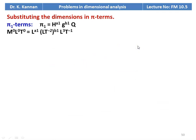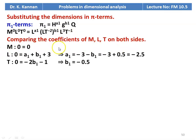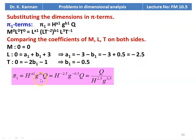For pi1: M⁰L⁰T⁰ = L^a1 · (LT⁻²)^b1 · L³T⁻¹. Comparing: for L, 0 = a1 + b1 + 3; for T, 0 = −2b1 − 1. Solving: b1 = −0.5, a1 = −2.5. Therefore pi1 = h⁻²·⁵ · g⁻⁰·⁵ · q = q / (h²·⁵ · g⁰·⁵).